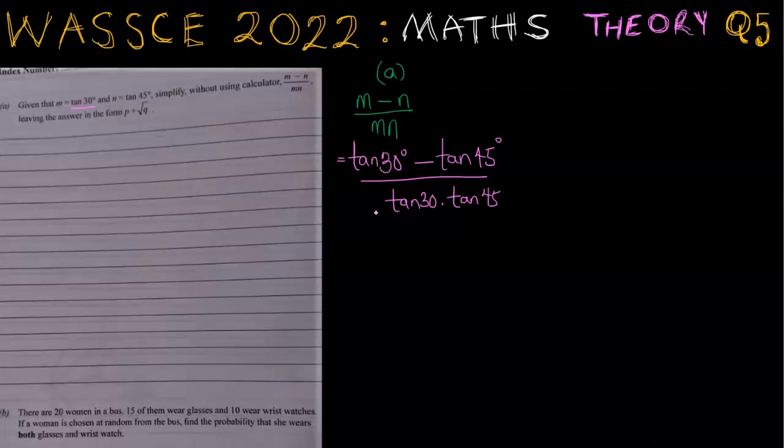In a previous video on trigonometry, I obtained the sine, cosine, and tangents of special angles, which include 30 degrees and 45 degrees. To see the video, just click on the link at the top right corner of your screen.